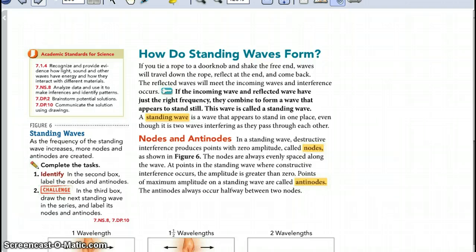Nodes and antinodes. In a standing wave, destructive interference produces points with zero amplitude called nodes as shown in figure 6. The nodes are always evenly spaced along the wave. At a point in the standing wave where constructive interference occurs, the amplitude is greater than zero. Points of maximum amplitude on the standing wave are called antinodes. The antinodes always occur halfway between two nodes.